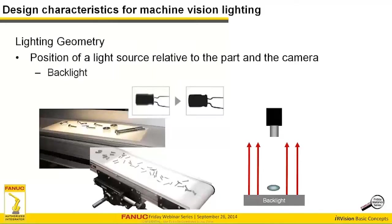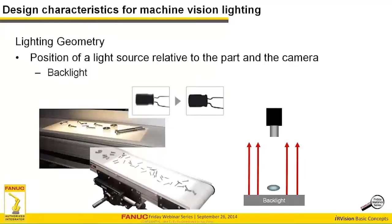The other lighting type I want to highlight is backlighting, which can be extraordinarily valuable for robotic guidance. If you're able to backlight a part, you get a clean image highlighting all the features — even if parts are slightly touching, you can usually overcome that challenge. You get an accurate image of part edges. Even if the part is semi-translucent, depending on the light color selected, you may be able to get a nice profile of the part over backlighting.